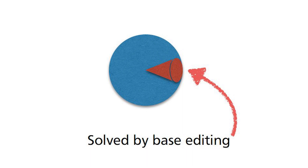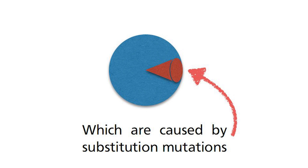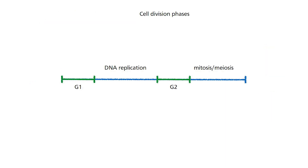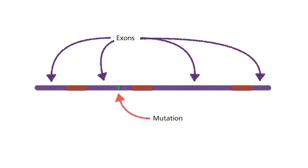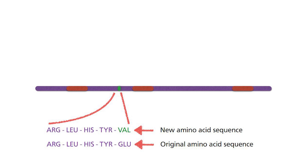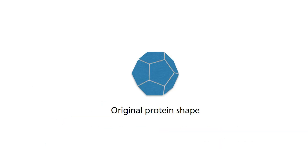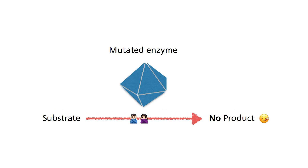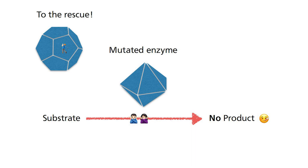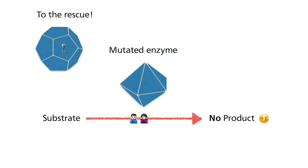Specifically, base editing focuses on monogenic diseases that arise due to substitution mutations. Substitution mutations occur during the DNA replication phase of a cell cycle, where an original base is swapped out with another. If this occurs in the exon of a gene, it can cause the original amino acid to be replaced by another. In cases where genetic disease arises, the new amino acid causes the protein to deviate from its original conformation, resulting in a loss of function and hence disease. Restoring back to the original by base editing completely and utterly cures the genetic disease.